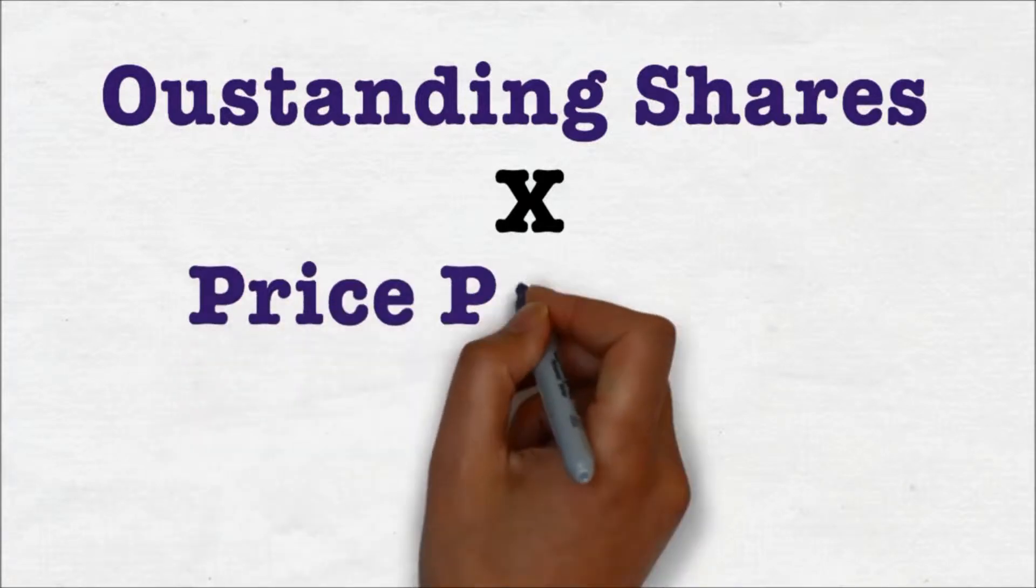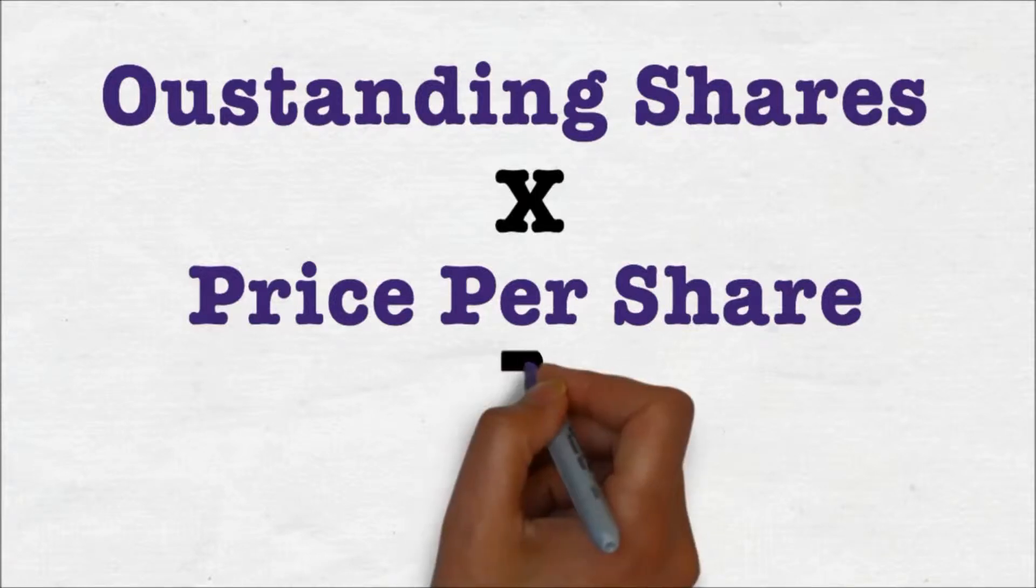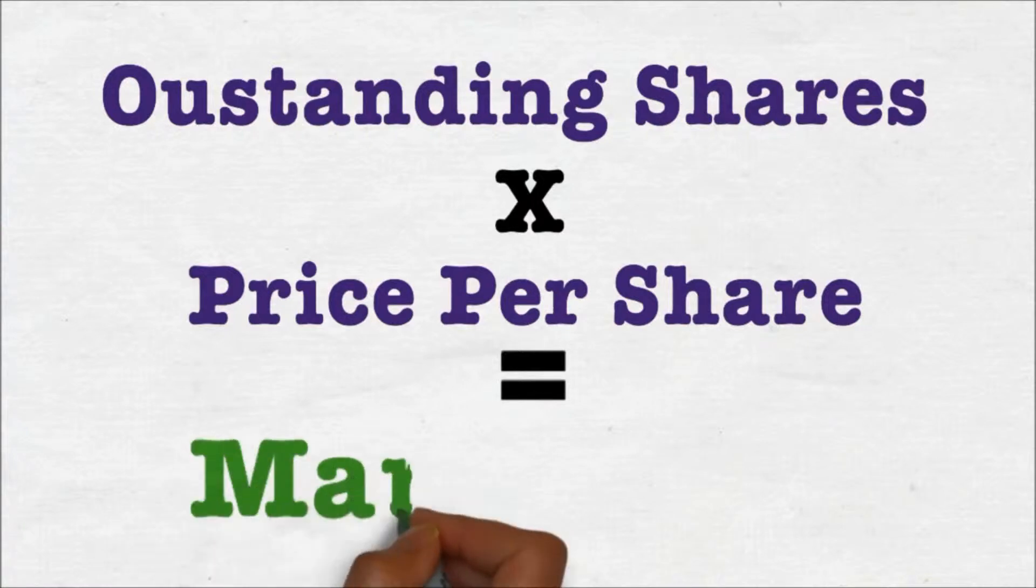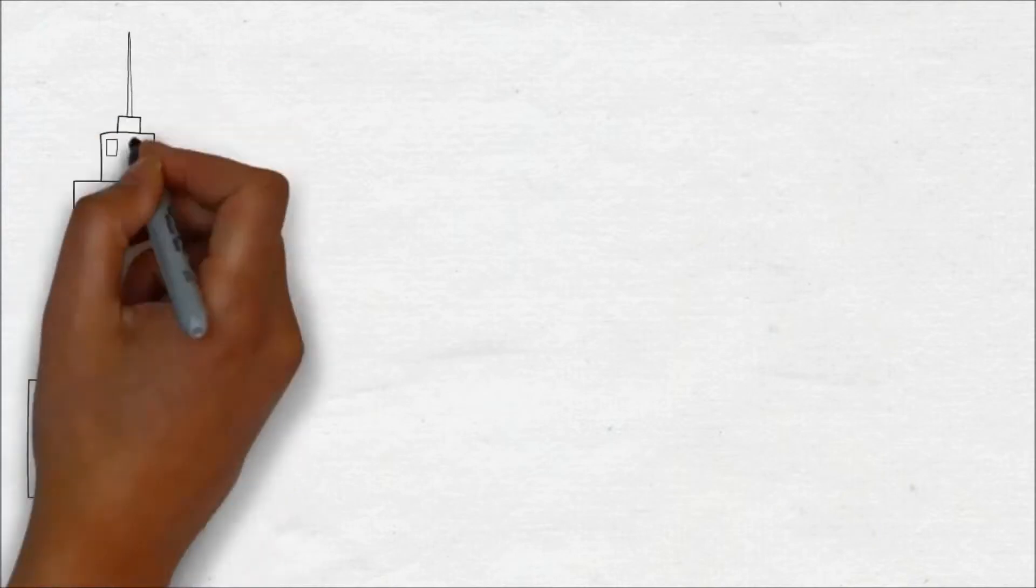When you're looking at a company's profile, you take the outstanding number of shares and multiply it by the price per share. This is going to give you an overall estimate, and using that you can stratify the companies based on their estimated size.